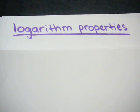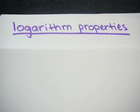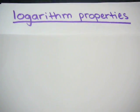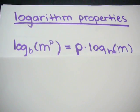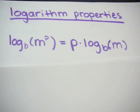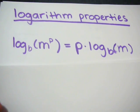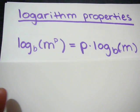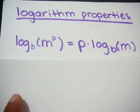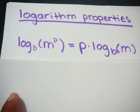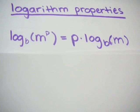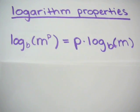Today I'm going to be discussing logarithm properties. The first property is that log of m to the power of p is equal to p times log of m.